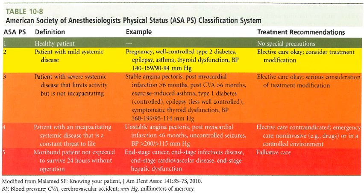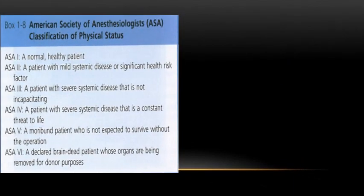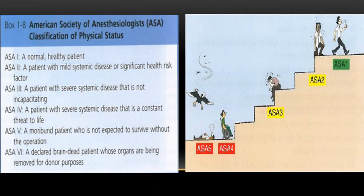Class 5 is the moribund patient not expected to survive 24 hours without interventional operation, like end-stage cancer or end-stage infectious disease — here we only give palliative care. An additional class, ASA Class 6, has been added: the patient declared brain dead whose organs are being removed for donation purposes. An illustrative diagram on the right-hand side shows the physical capacity of the patient according to their ASA classes.